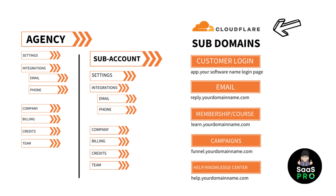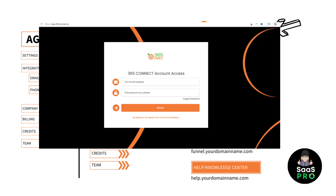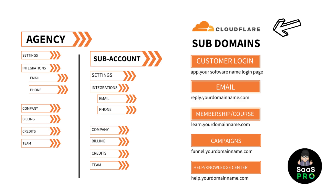You want to create subdomains right away. When I say subdomain, we don't want your main website — you want something like app.yourwebsite.com where all your customers go to log in. You also want an email domain that matches yours for sending email, like reply.yourdomain. For membership and courses, something like learn.yourdomain. If you're running different campaigns, it's fun to have subdomains for those. A help or knowledge center subdomain is also recommended.